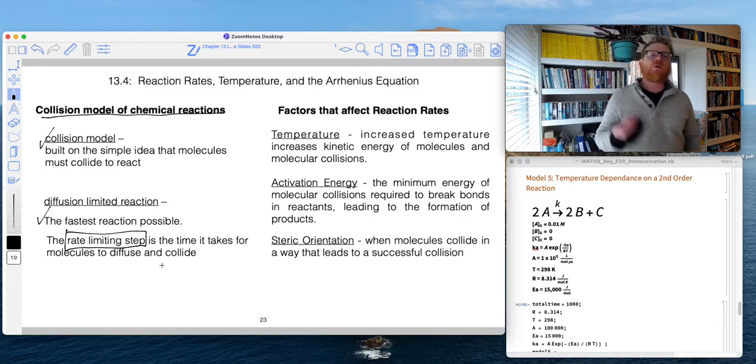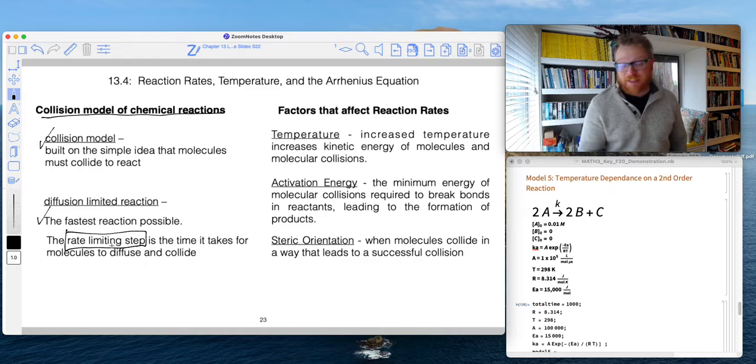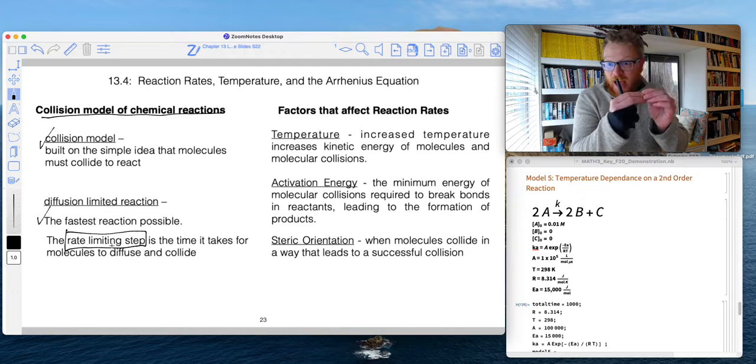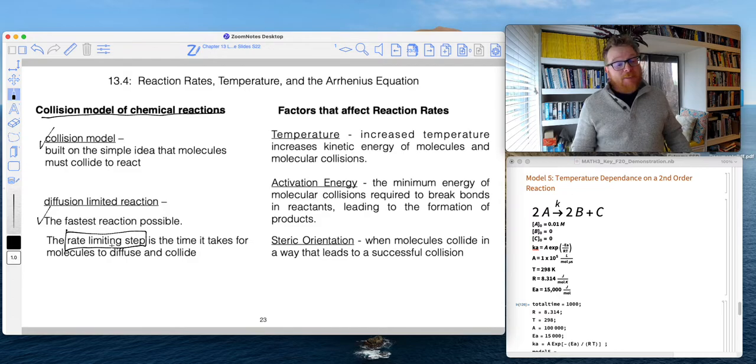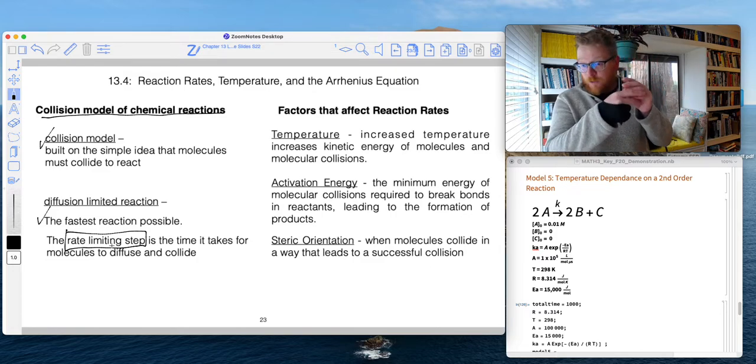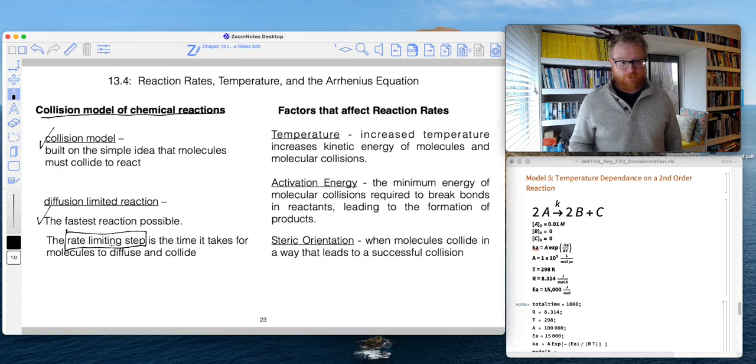So that's one thing we start to think about with the collision model is we have the fastest possible reaction, which would be this diffusion limited. In other words, the instant the molecules collide, they react. But there might be some other steps in there. So the molecules might collide and they have to flirt around a little bit and dance around in order to find the sweet spot. And that would take up some time.